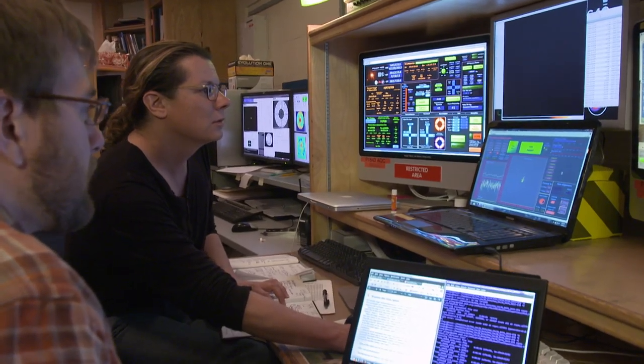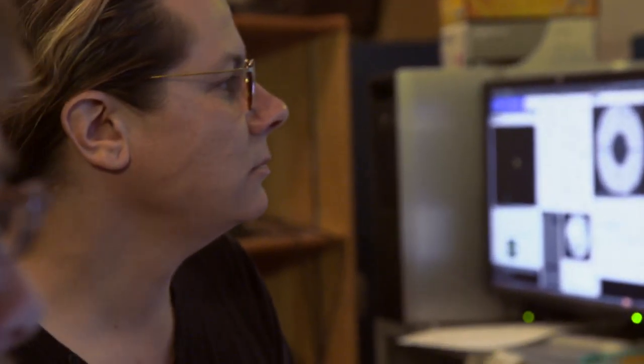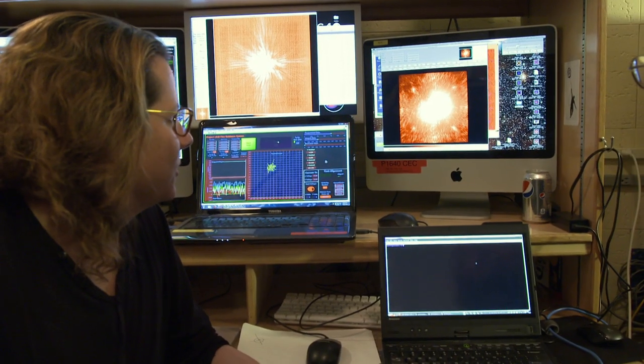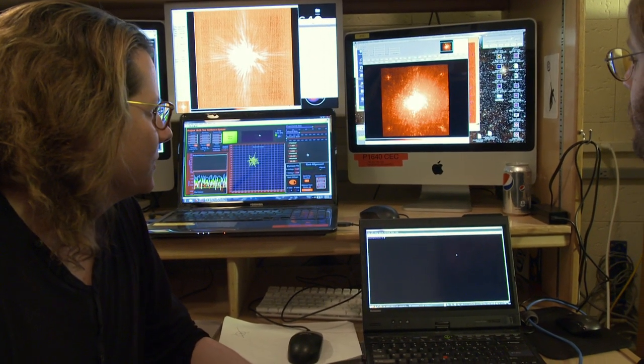And our goal, long term, is to observe about 150 to 200 stars, and start to really characterize these exoplanet systems for the first time. So here's the first image of this star.